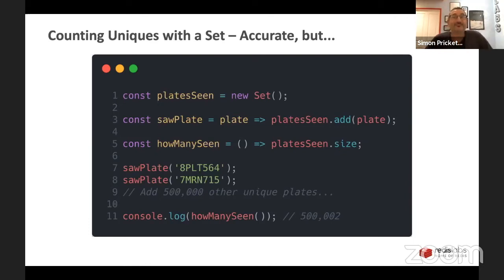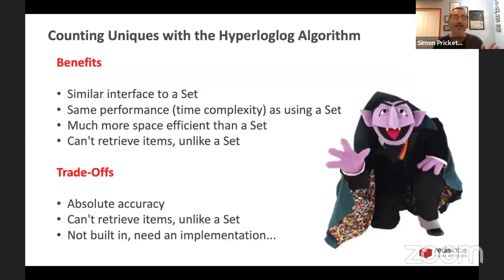So there's two problems with the set: storage can get out of control in order to get a perfect result, and we've got a potential privacy problem that we remember all of these license plates. So given those are our problems, what does a hyperloglog algorithm do for us and why might we use one?